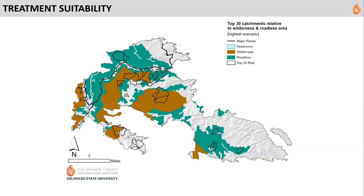Wilderness was a really big issue for Cameron Peak. On this map you'll see the top 30 highest-risk watersheds outlined in black, roadless areas in green, and wilderness areas in dark brown. These are national designations that essentially limit what can be done in those areas — they're protected for conservation. In a post-fire context, it's really hard to get any post-fire treatments on wilderness land. As you can see with those top 30 highest-risk watersheds, most of the contributing area is in wilderness or roadless, which became a pretty big issue for this specific fire.